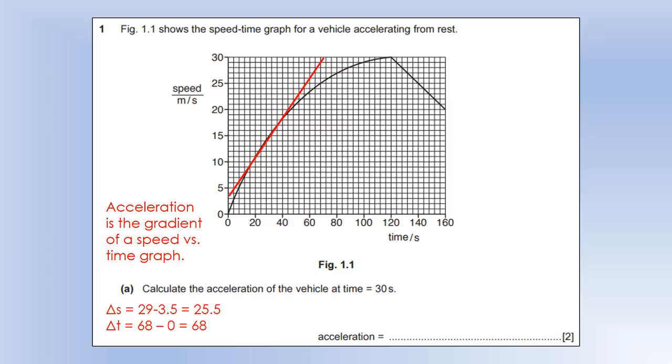We then need to find the gradient of that graph, so that's what I'm doing here, I'm finding the change in speed and change in time. Gradient will be change in speed divided by change in time gives us a value of 0.38 meters per second squared to two significant figures. So that's our acceleration.